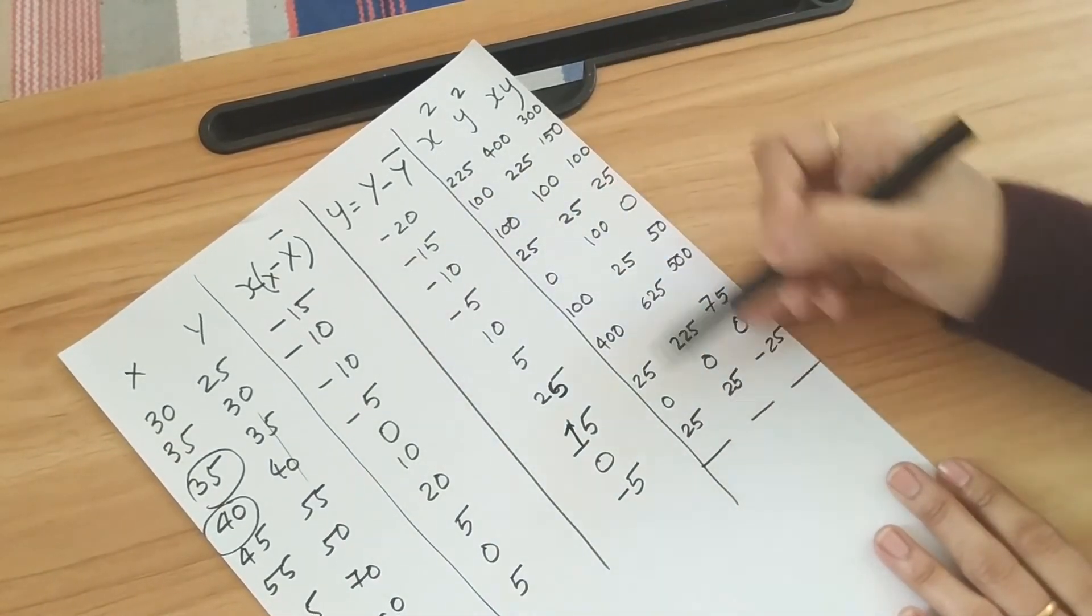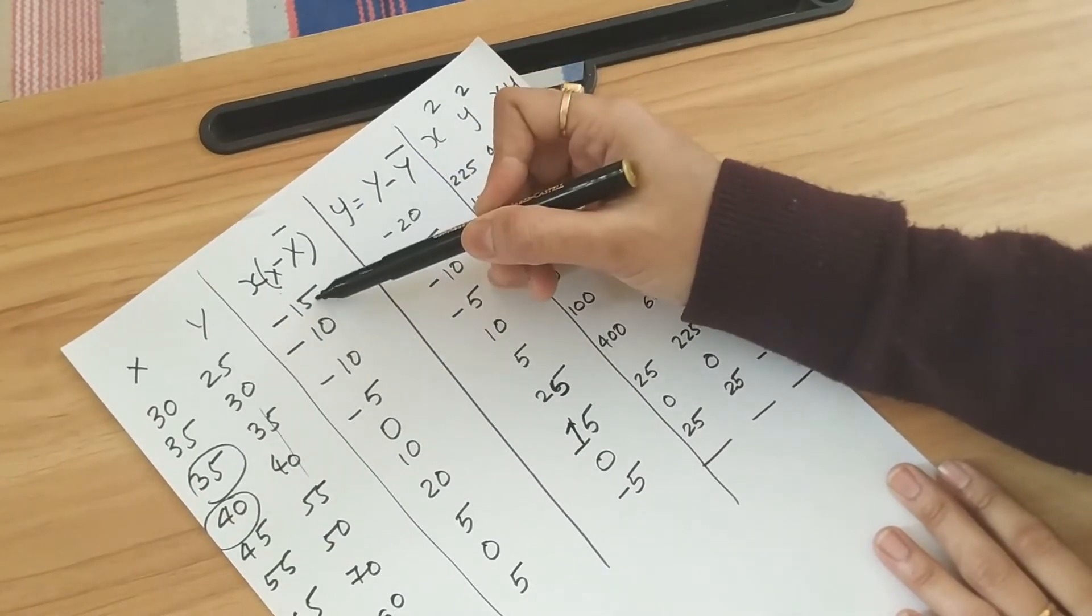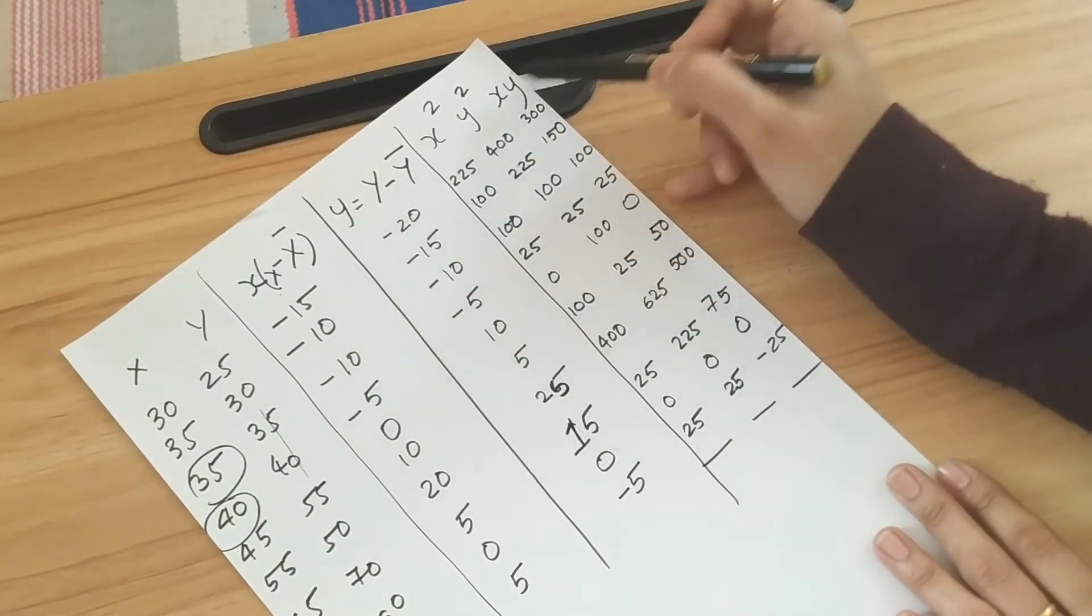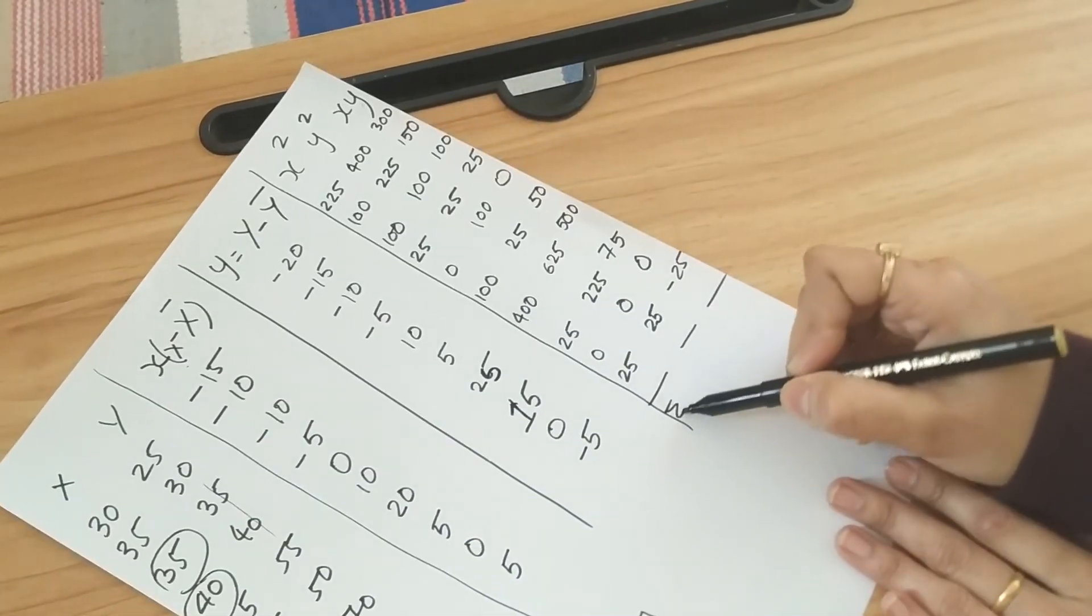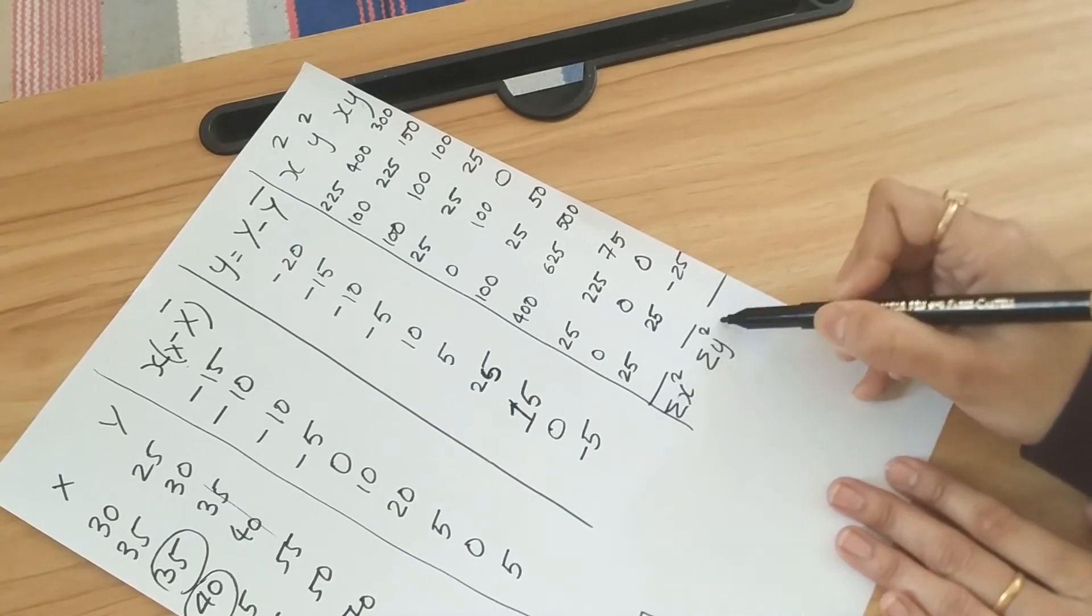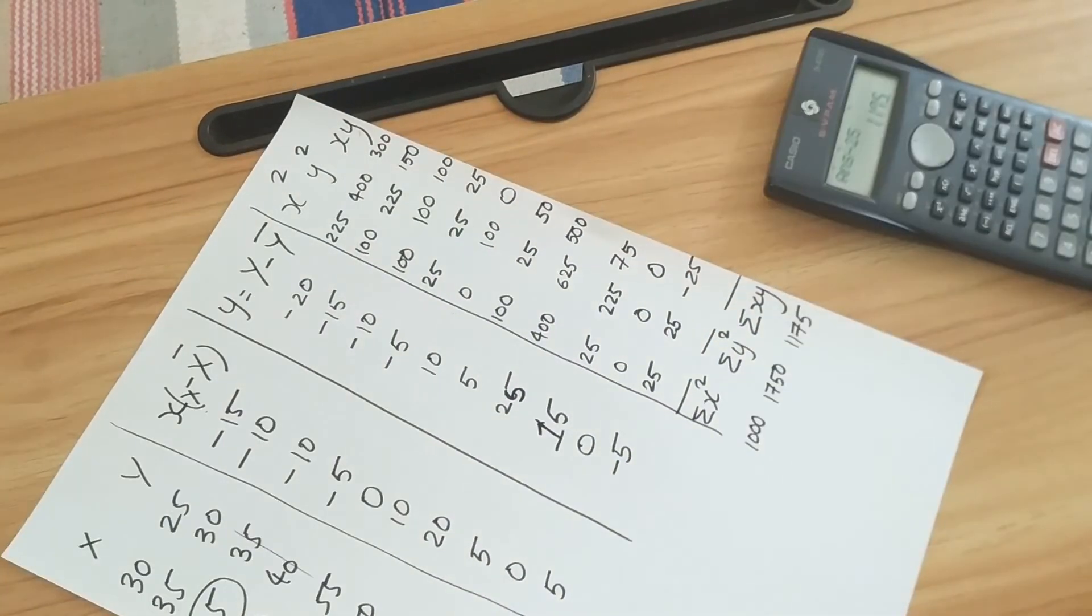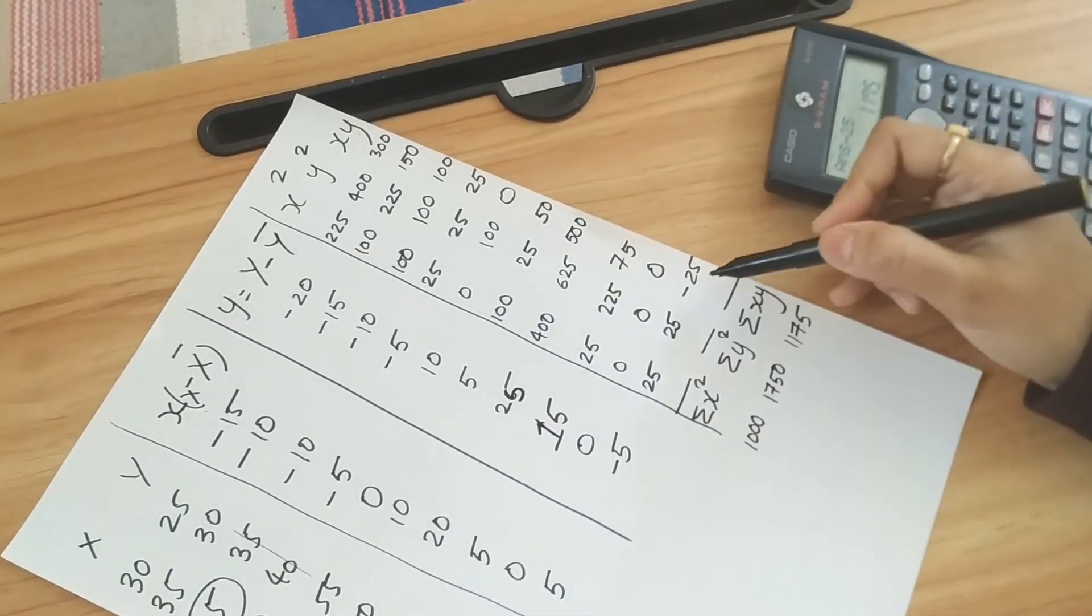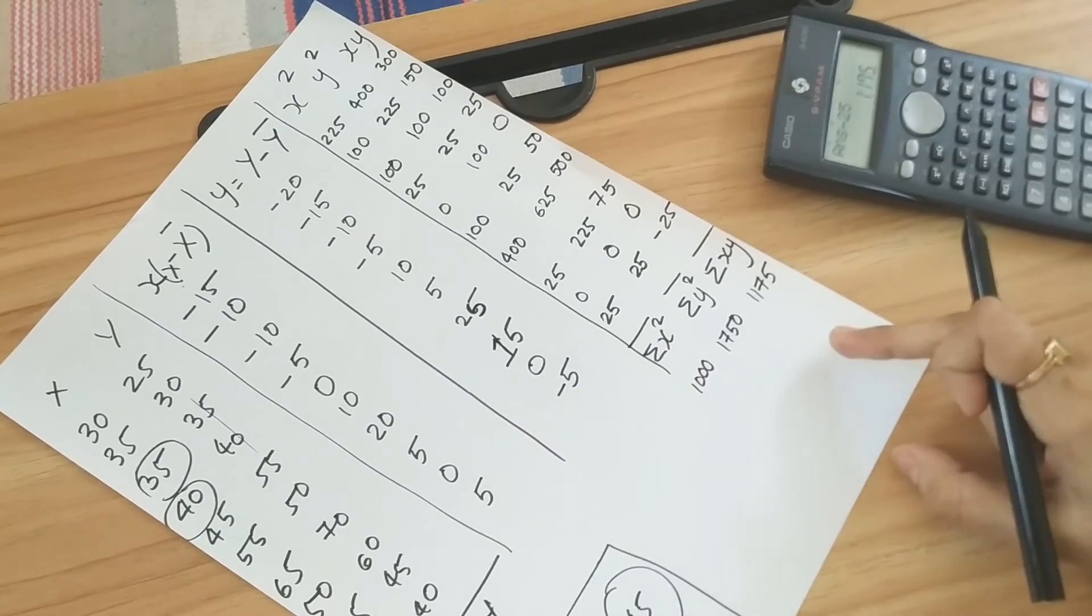So I have found out all the values. x square is this into itself, y square and x into y. Now we'll find summation of x square, summation of y square and summation of xy. So just total these. So I have totaled it up. You can see all the values here.